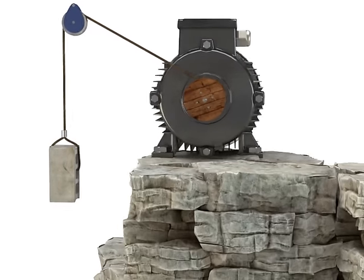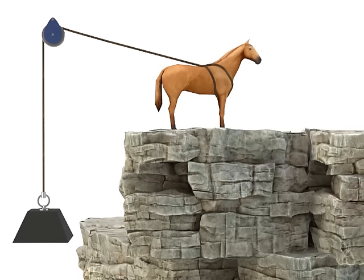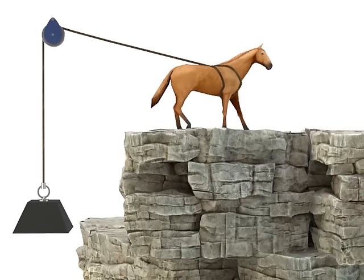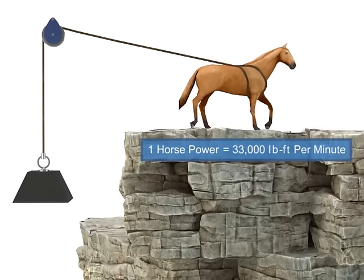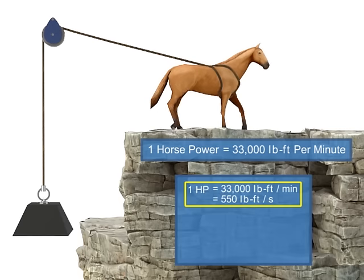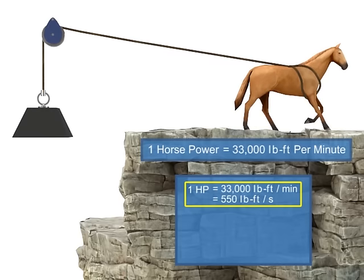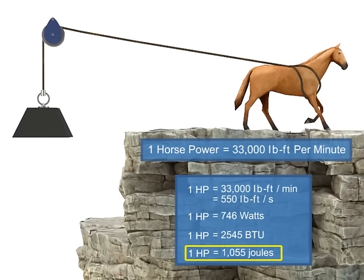Horsepower is defined as the rate at which work is accomplished. Years ago, before motors were invented, most work was accomplished manually. It was estimated that one horse could accomplish approximately 33,000 pound-foot of work per minute, and thus the term horsepower was born. In modern terms, horsepower is simply another unit of measurement for power, and can be translated into watts, BTUs, joules, or any unit of power. Units that measure motor power are typically in horsepower or watts.